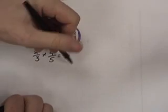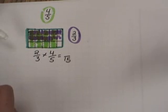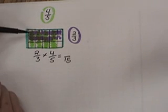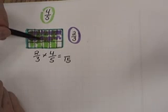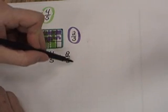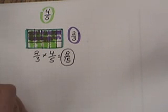This gives us a denominator of 15. The question is now, what is our numerator for our fraction? If you look at our model, you'll notice that a number of the squares are colored twice — that means they're colored purple and green. Let's count them: 1, 2, 3, 4, 5, 6, 7, 8. Or, 2 by 4 — 2 times 4 is 8. The product of two-thirds times four-fifths is eight-fifteenths.